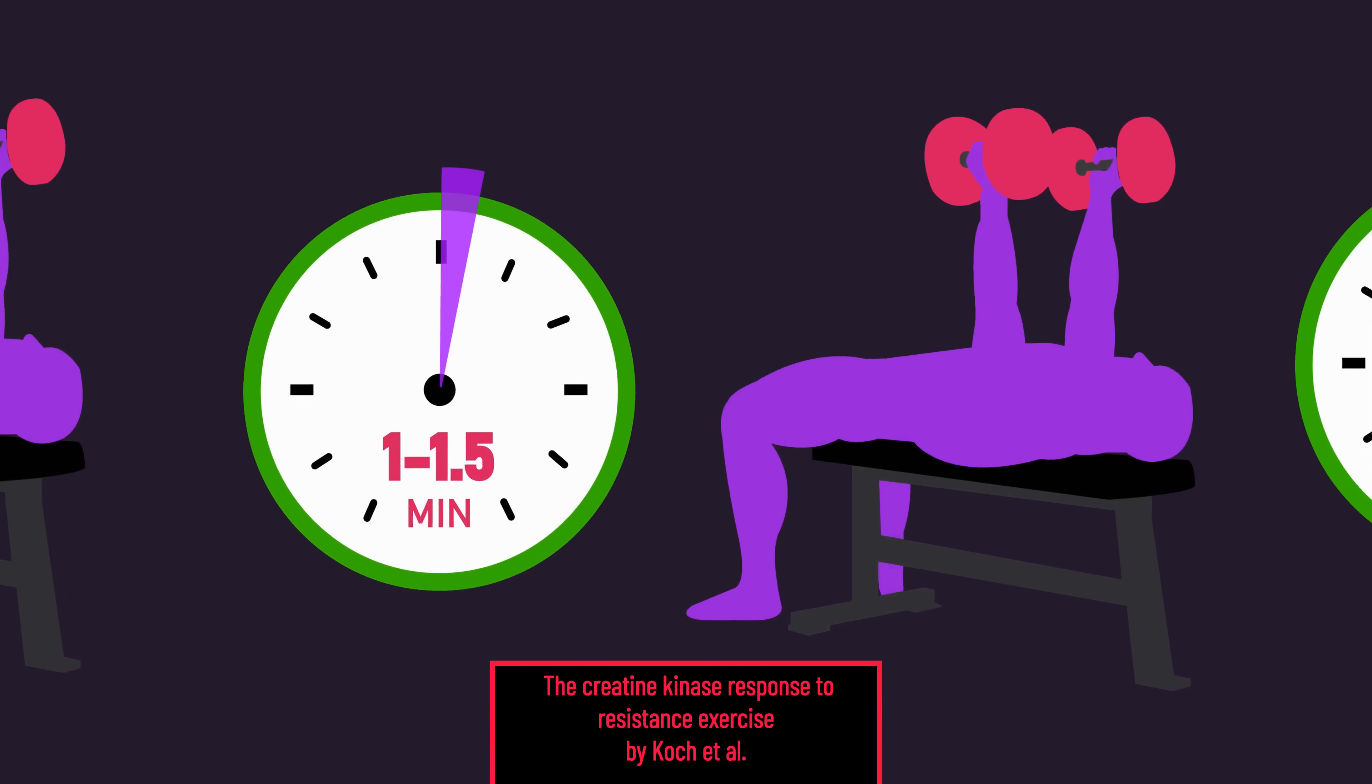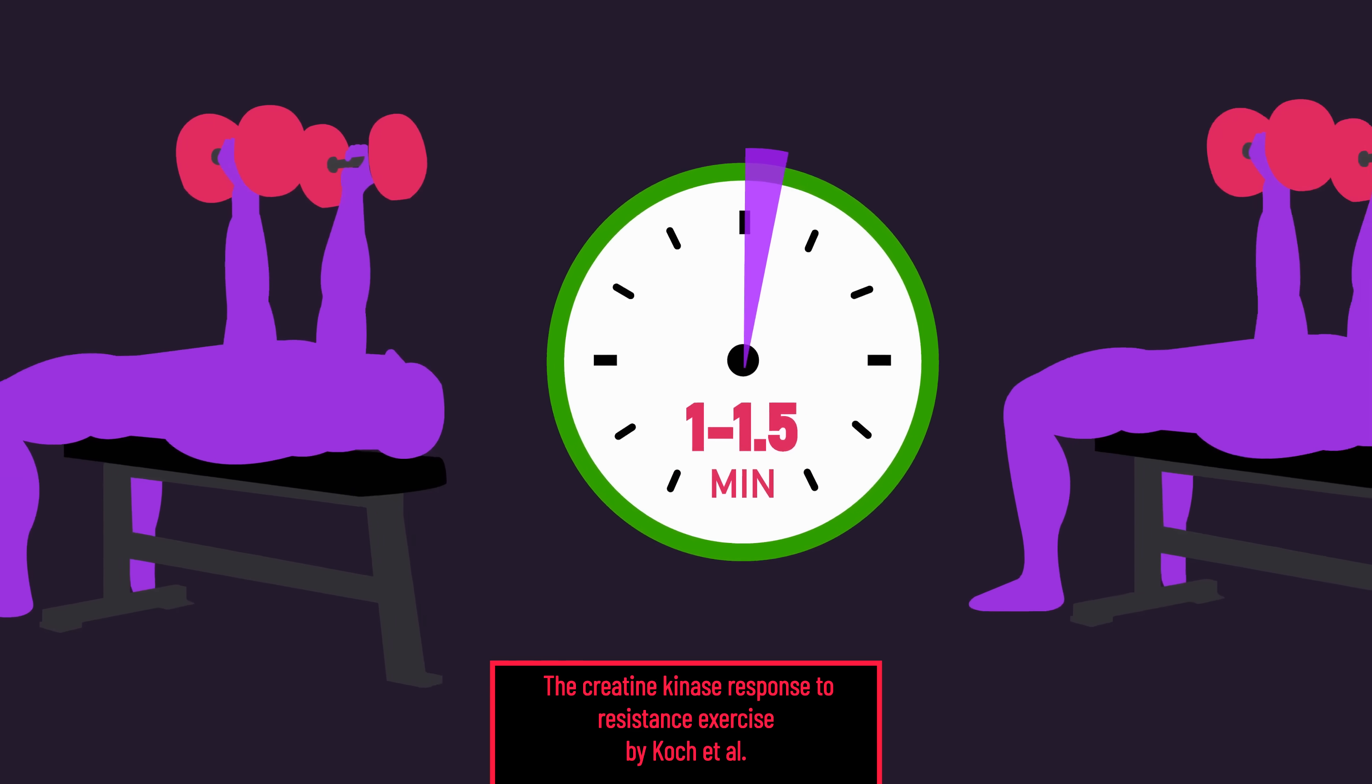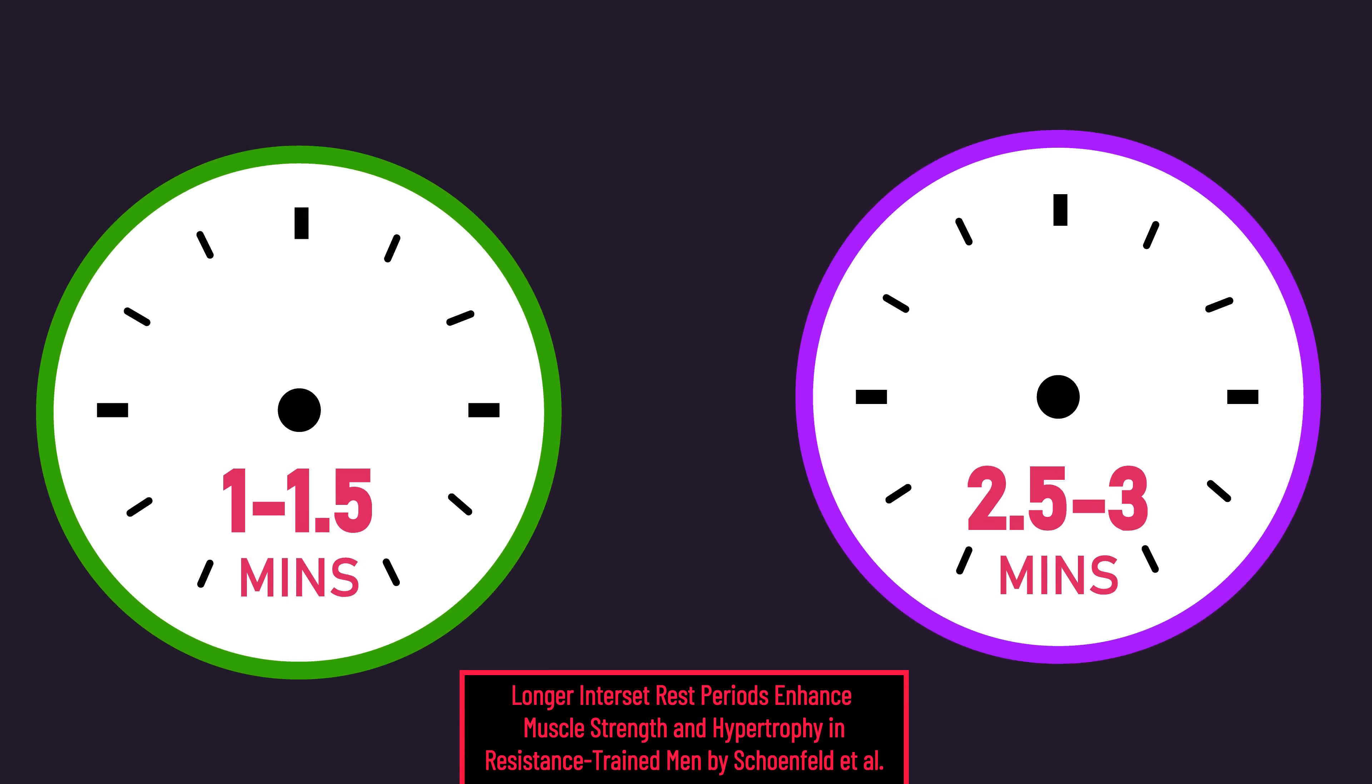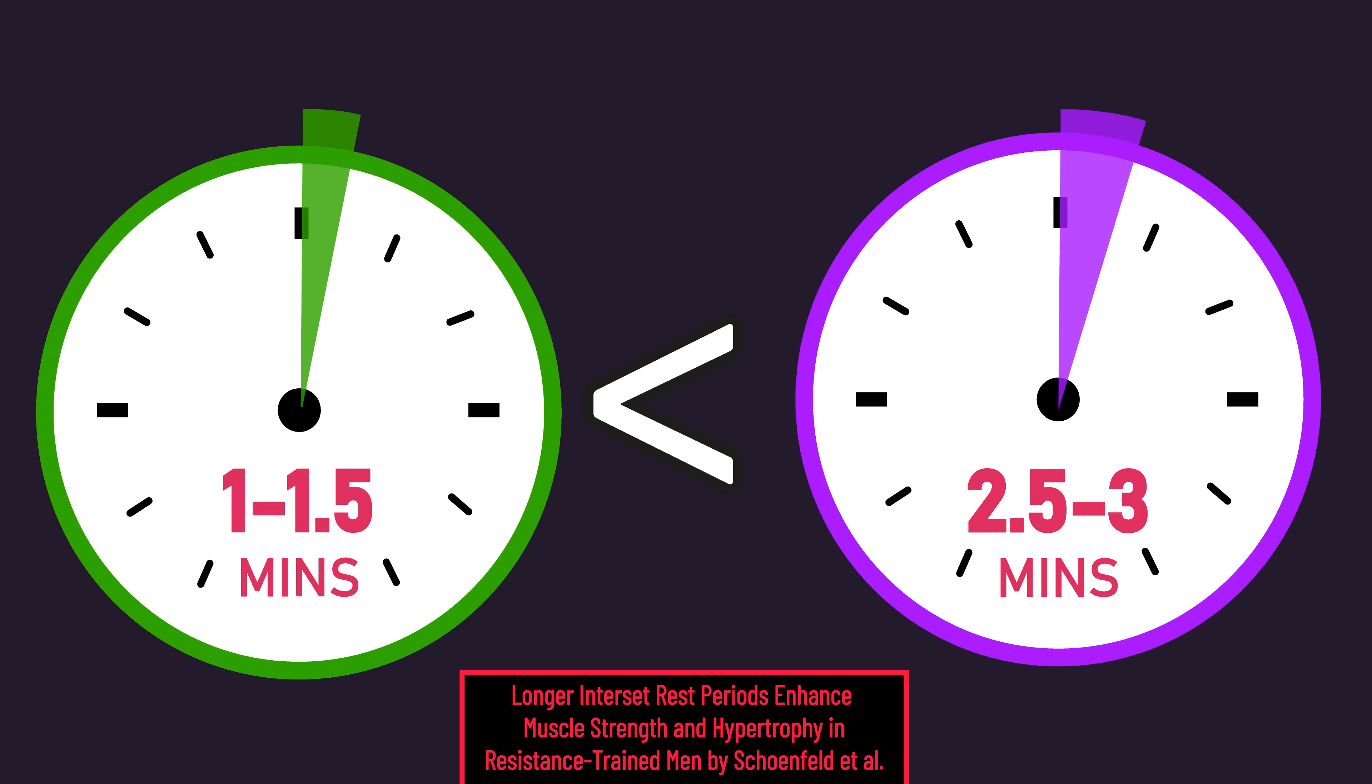Short rest between sets, one minute or less, tends to cause more muscle damage than resting longer between sets. Yet we know with compound exercises at least, resting 2.5 to 3 minutes between sets produces more hypertrophy than resting for one minute or less.